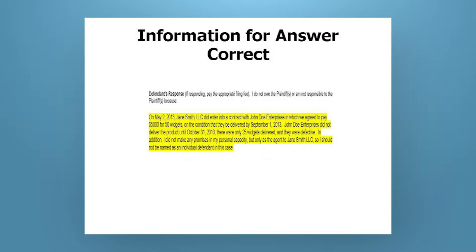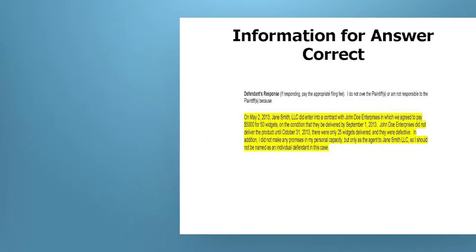She corrects him in saying she didn't make any promises as an individual, because he sued her as an individual and as a company. She's stating there: I didn't make any promises as an individual, only as an agent to the company, so I shouldn't be named as an individual defendant in this case.